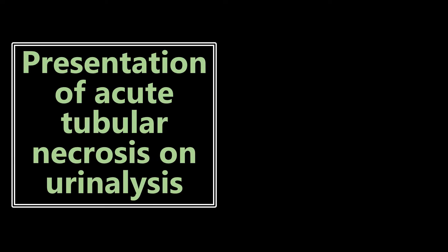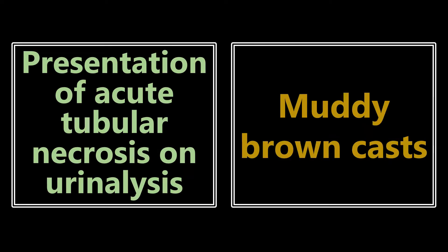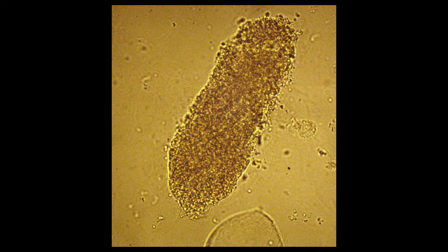Presentation of acute tubular necrosis on urinalysis: this is going to be muddy brown casts. We need to know this finding and recognize the picture — muddy brown casts are significant for acute tubular necrosis.